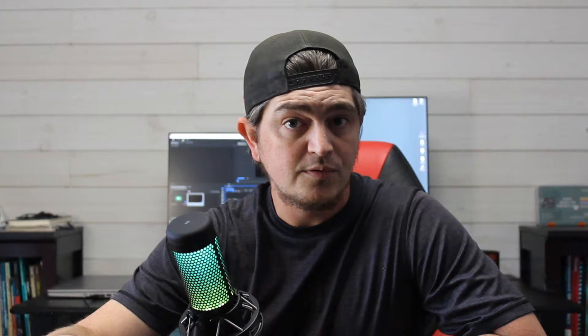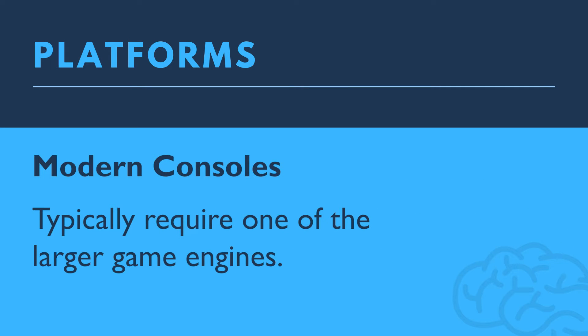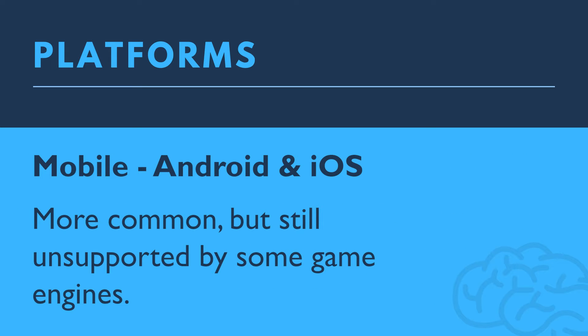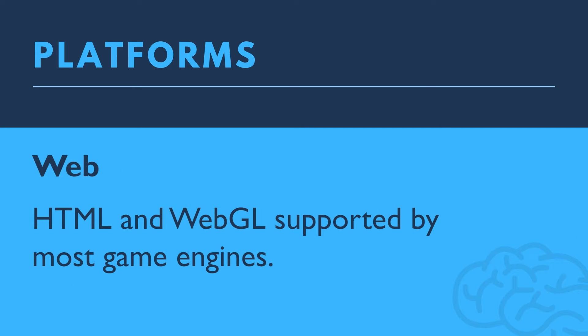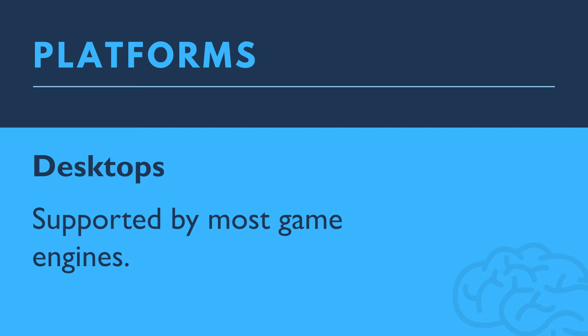Then start to use those tools in your own workflow. Next up is making games for a specific platform. If you plan on selling your games on a specific platform, you need to make sure that you have a game engine that can build to those platforms. Modern consoles like PlayStation, Xbox, and Nintendo typically require one of the larger game engines. Mobile platforms like Android and iOS are becoming much more common in game engines, but there are still some game engines that don't support them yet. If you're building games for the web, you don't really have to worry about this issue. Most game engines have support for both HTML and WebGL games. Likewise, PC, Mac, and Linux are supported by most game engines. Research your target platform and make sure the game engine you choose can build to those platforms.